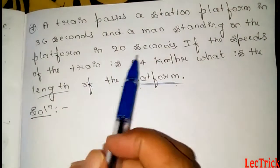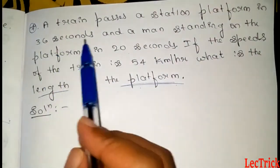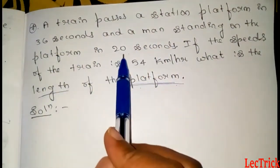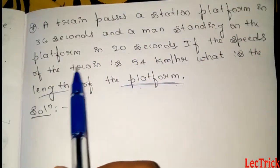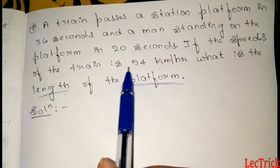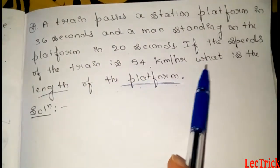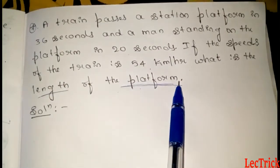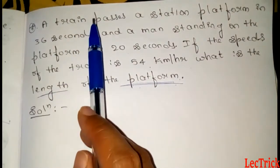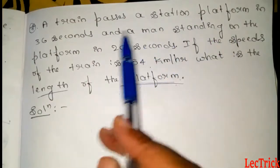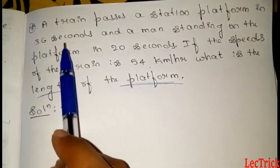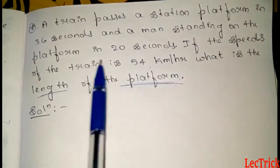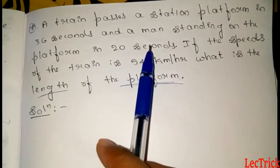Next question. A train passes a station platform in 36 seconds and a man standing on the platform in 20 seconds. If the speed of the train is 54 km per hour, what is the length of the platform?